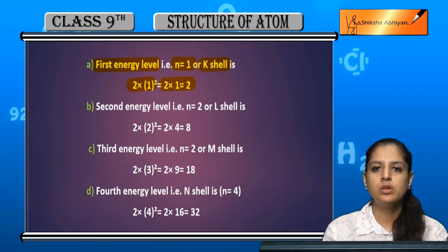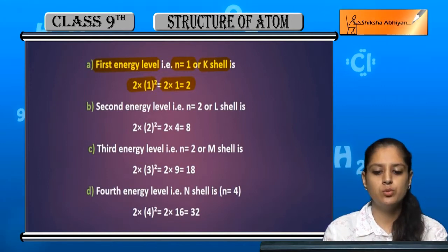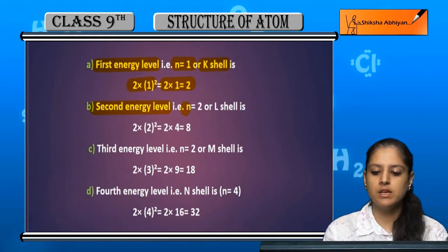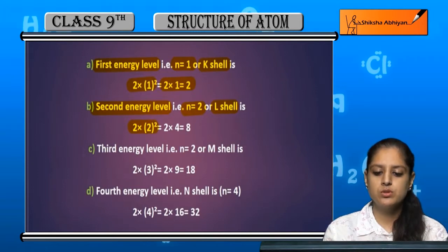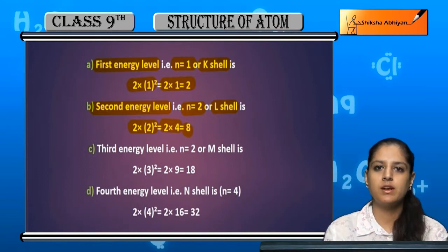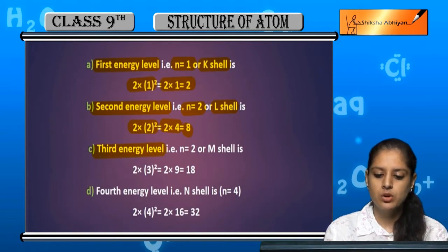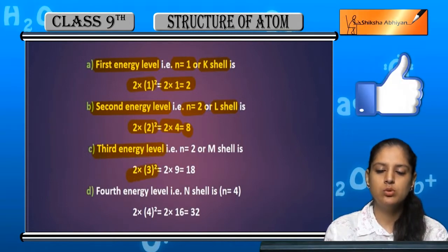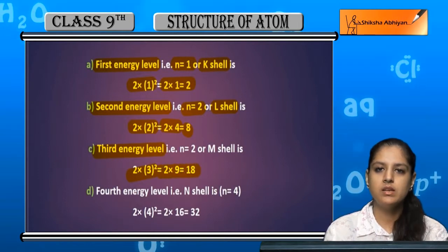So the maximum electrons in the first shell is 2. For the second energy level, n is 2 — the L shell — so 2 multiplied by 2 squared is 2 into 4, giving a maximum of 8 electrons. For the third energy level, 2 into 3 squared is 2 into 9, giving 18.